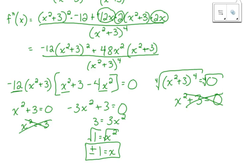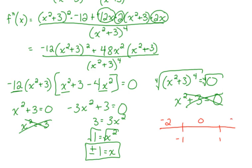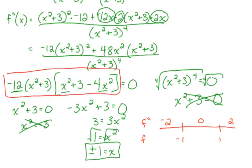Let's put those on a number line to see what happens with concavity. Negative 1 and positive 1 are our potential points of inflection, so I'm going to choose test values of negative 2, 0, and positive 2, and plug those into the second derivative — because the second derivative tells me concavity. When I plug in negative 2, I'm going to use the simplified factored version because that makes life easier.